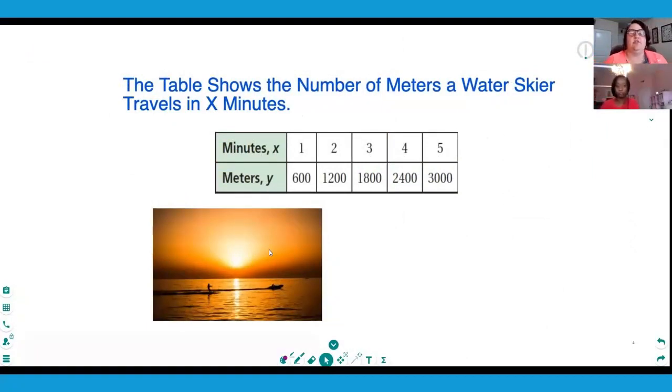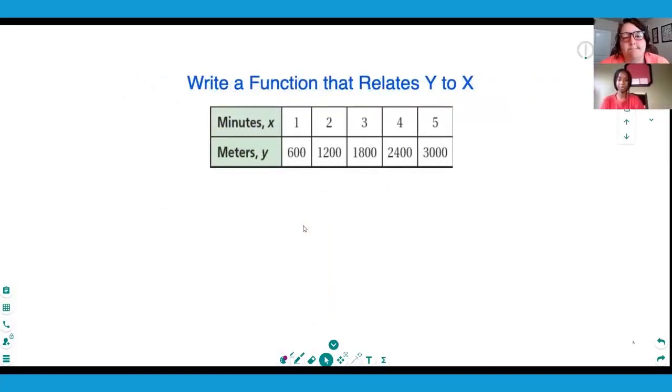Direct variation. This table shows the number of meters a water skier travels in x amount of minutes. Y changes depending on how many minutes you're going—how long you're going for. Y is dependent upon x. What is changing x? Essentially, what is the speed? Every minute, they're going 600 meters. So our function is: the distance we travel is dependent upon how many minutes times 600. It's going at a speed of 600 meters per minute. Our function is y equals 600 times x.